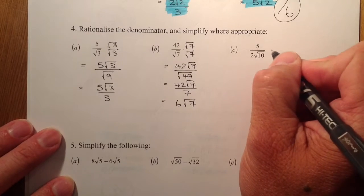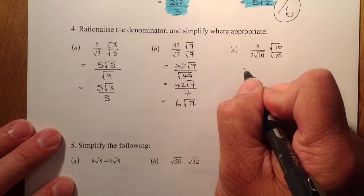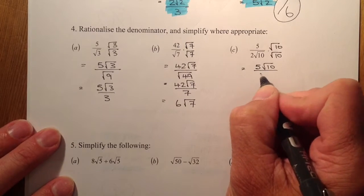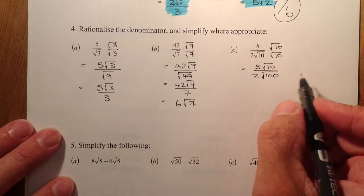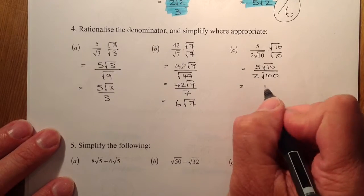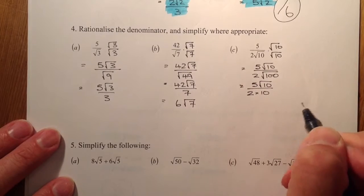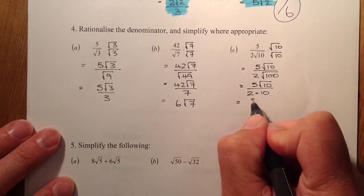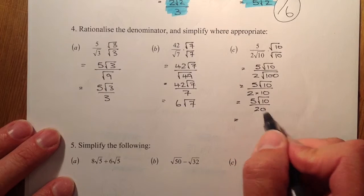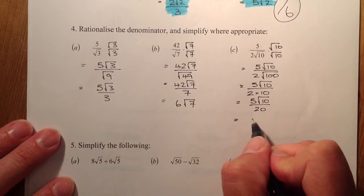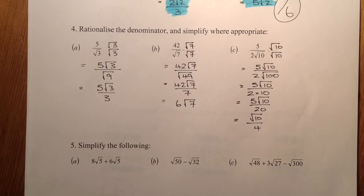Over here, I've got root 10 on the bottom, so I'll multiply the top and the bottom by root 10. That gives me 5 root 10 on the top. On the bottom, I've got 2, and root 10 times root 10 gives me root 100, which equals 10. So that's 5 root 10 on top and 2 times 10 — which is 20 — on the bottom, giving 5 root 10 over 20. Dividing top and bottom by 5, I get root 10 over 4 as the final answer.